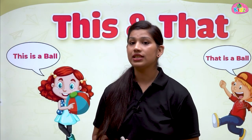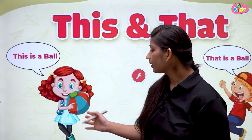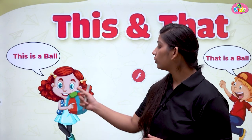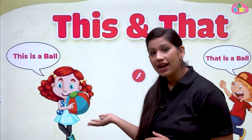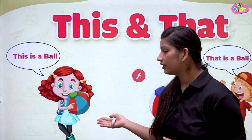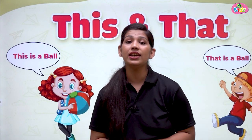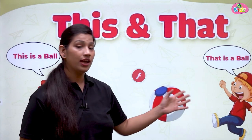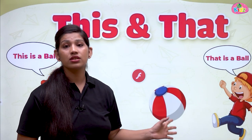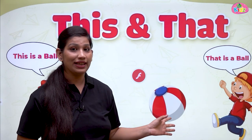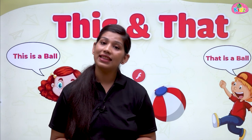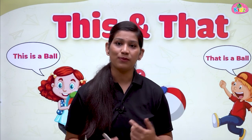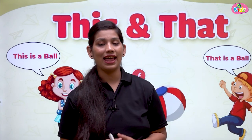Here you can see two kids. This is a ball — kyunki is girl ke paas hi ball hai, toh woh kya bolegi? This is a ball. Lekin jo boy hai, usse ball door hai, uske paas toh nahi hai, toh hum kya bolenge? That is a ball. That is all for today's concept of this and that.